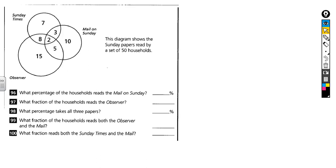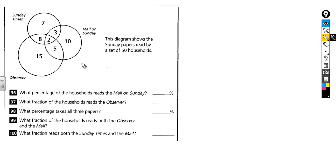Here is a Venn diagram question that has caused a few scratched heads. Let's just review what a Venn diagram is. A Venn diagram is a way of using overlapping circles to represent data or information that we've collected.